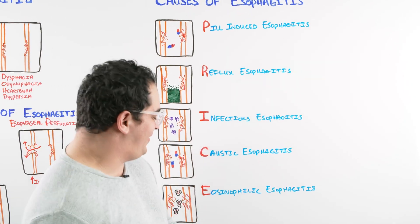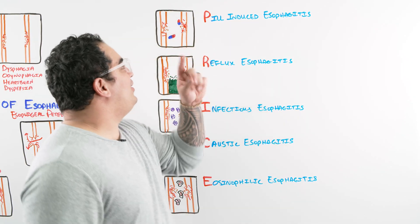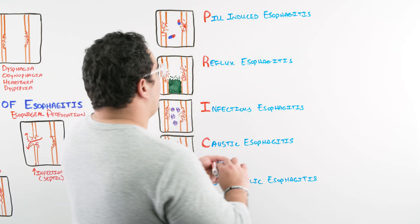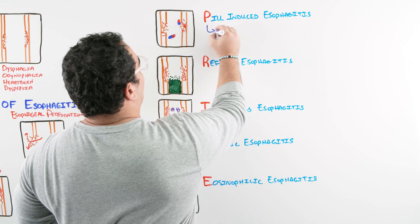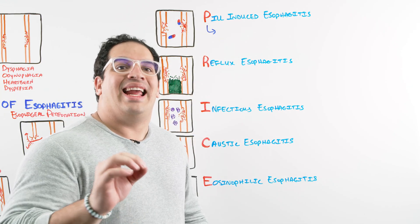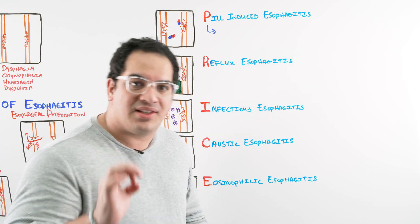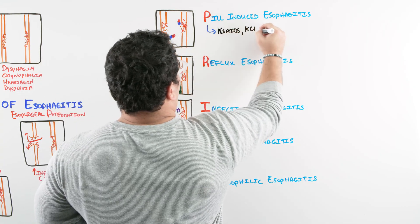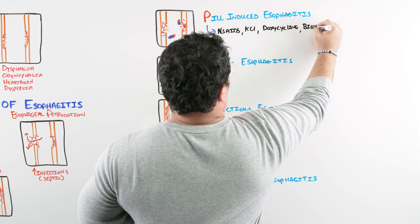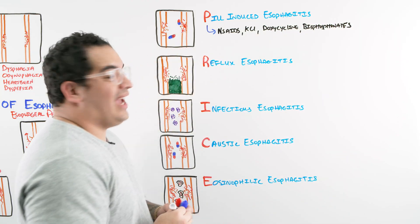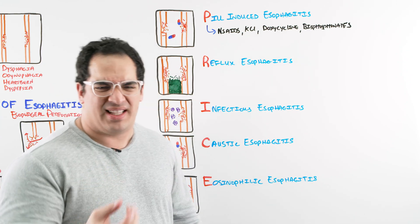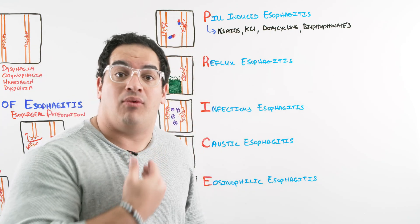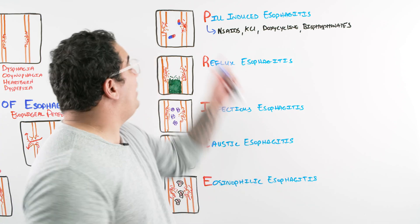For pill-induced esophagitis, ask yourself what pills is the patient taking that's causing problems. The usual culprits are NSAIDs, doxycycline, potassium chloride, and bisphosphonates. The chemical properties of these drugs — especially if not taken with enough water and they get stuck in the esophagus — have the ability to injure the mucosa and cause massive inflammation.